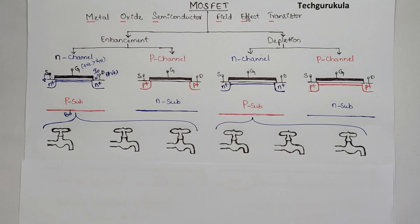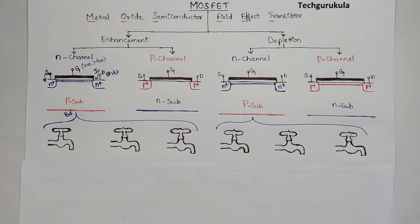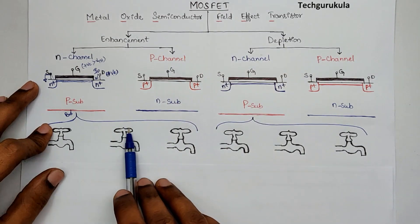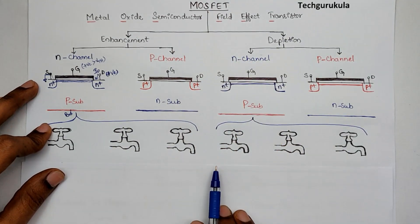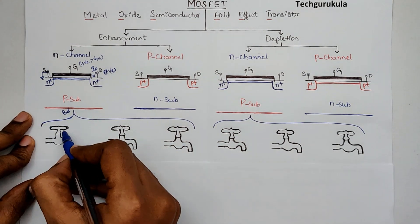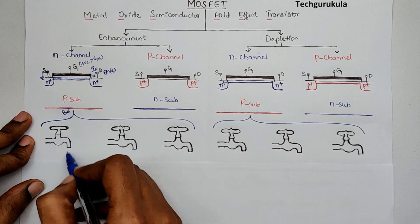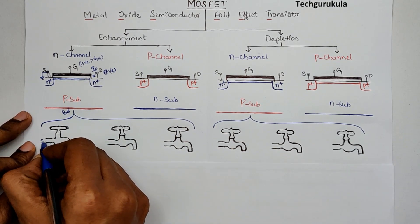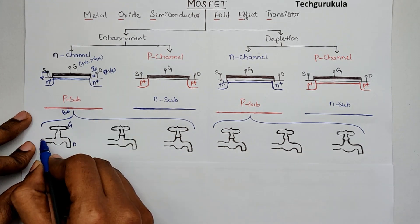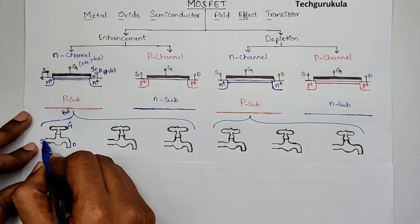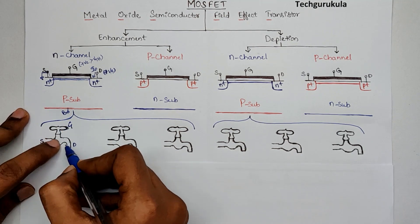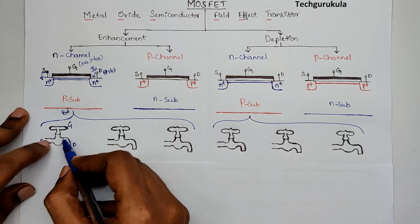Now I'm going to show you an analogy using a tap, considering only the N-channel enhancement MOSFET. In the case of a tap, we have a knob with which we can control whether water flows or not. I'm taking one side as analogous to source, the other as drain, and the knob as gate. The source side would have a lot of water — connected to an overhead tank. Unless the gate allows water through, the drain would not drain it. So the gate controls the water flow.